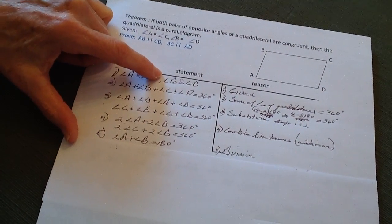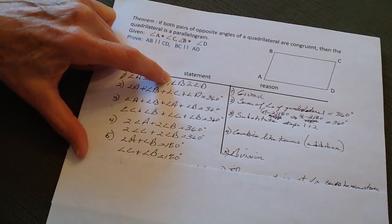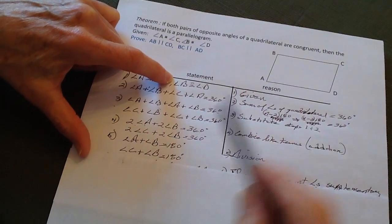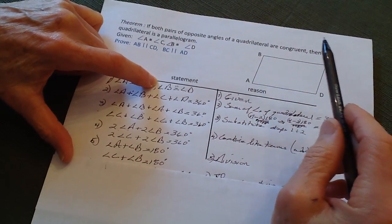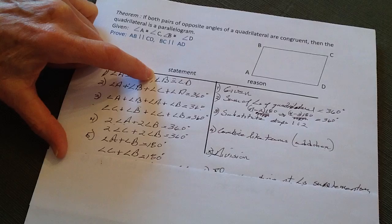Now, if I divide both sides by two, I'll end up with angle a plus b equals 180 degrees, and angle c plus b equals 180 degrees,